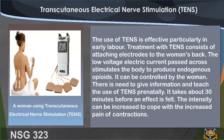Transcutaneous electrical nerve stimulation (TENS): the use of TENS is effective, particularly in early labor. Treatment with TENS consists of attaching electrodes to the woman's back. The low-voltage electric current passed across stimulates the body to produce endogenous opioids. It can be controlled by the woman. There is need to give information and teach the use of TENS prenatally. It takes about 30 minutes before an effect is felt, and the intensity can be increased to cope with the increased pain of contractions.